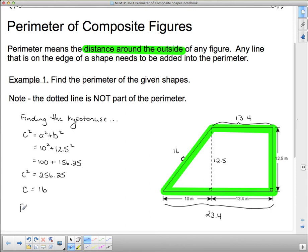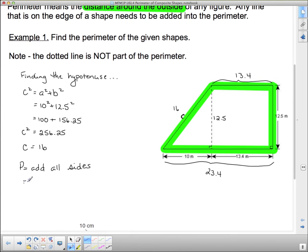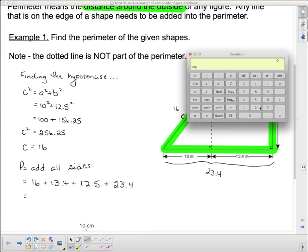So perimeter equals add all sides. Every time, you can use that. And in this case, the sides are the green sides there, 16 plus 13.4 plus 12.5 plus 23.4. Now, let's add those all off. And I'm going to pull up my calculator to do that too. 16 plus 13.4 plus 12.5 plus 23.4.